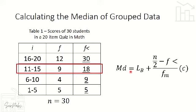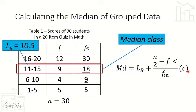Going back to the formula — median equals L sub B plus N over 2 minus F less than, over F sub M, times C — let's find the lower boundary. The lower boundary is 0.5 less than the lower limit. The lower limit of the median class (11–15) is 11, so the lower boundary is 11 minus 0.5, which equals 10.5.